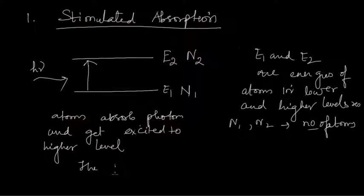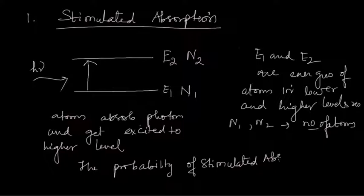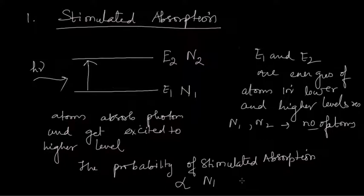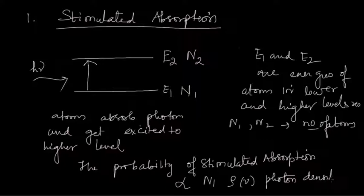The probability of stimulated absorption depends upon two factors: it depends upon N1, the number of atoms in the lower state, and it depends upon rho(nu), the photon density — that is, how many photons are being incident on these atoms. So these are the two factors on which the probability of stimulated absorption depends.